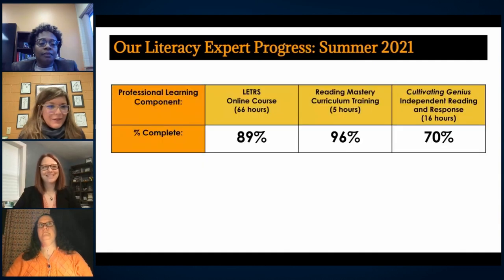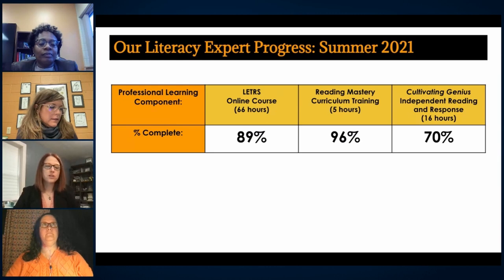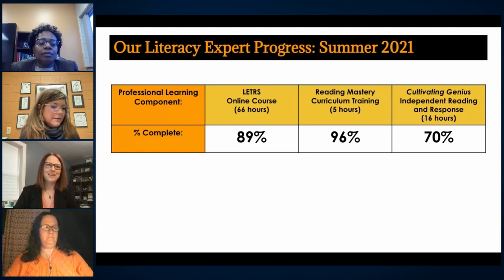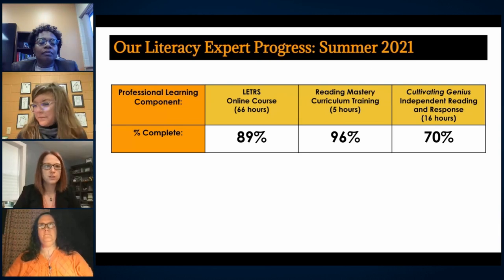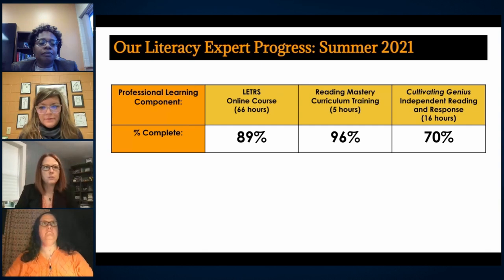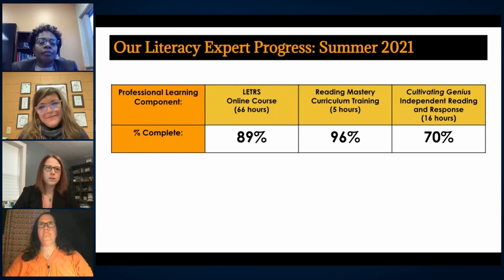Heidi is going to share a little bit more about our outcomes from our summer work. I am Heidi, the Special Education Director. At the end of the summer of 2021, 89% of our staff completed the LETRS online course. Our Reading Mastery, which is our intervention reading curriculum training — we were able to get 96% of our staff trained in that this summer. Then our Cultivating Genius book response, independent reading and response, which was 16 hours — 70% of our staff completed it over the summer, and we're still continuing that work. We've also had the privilege of hiring several new staff members who are just as passionate about literacy, and they are completing LETRS volume one right now.